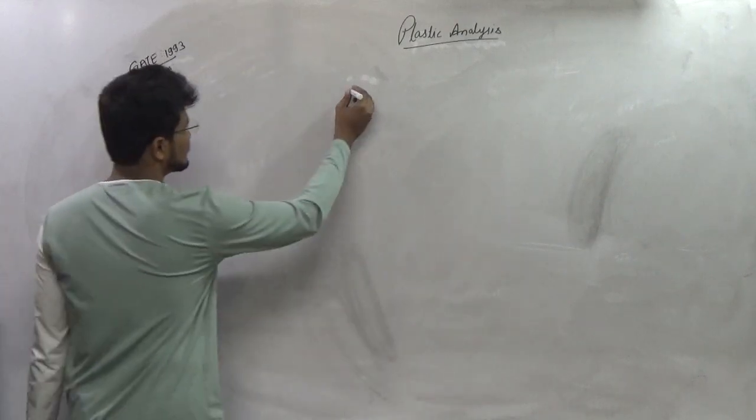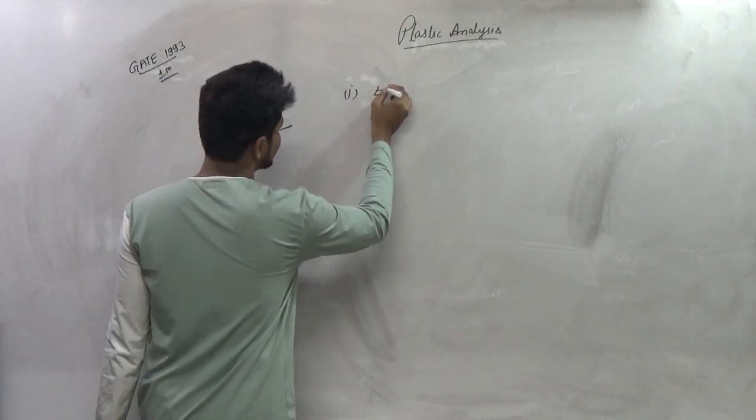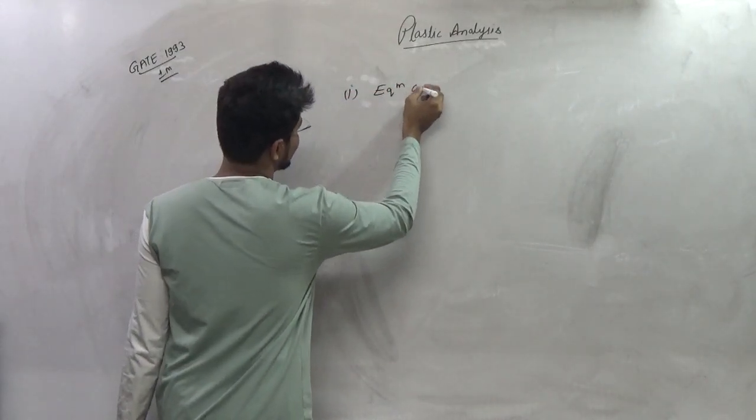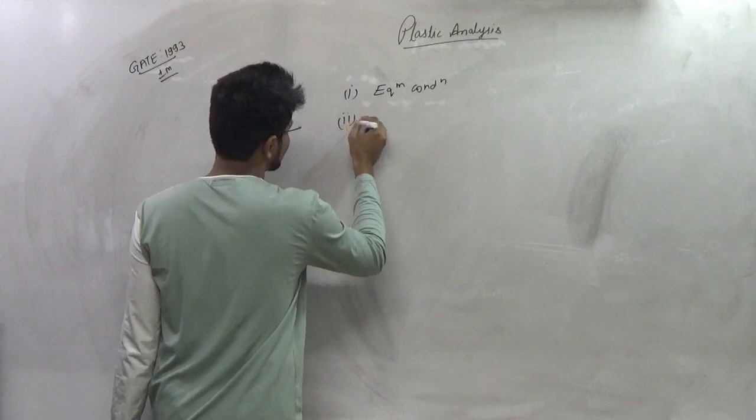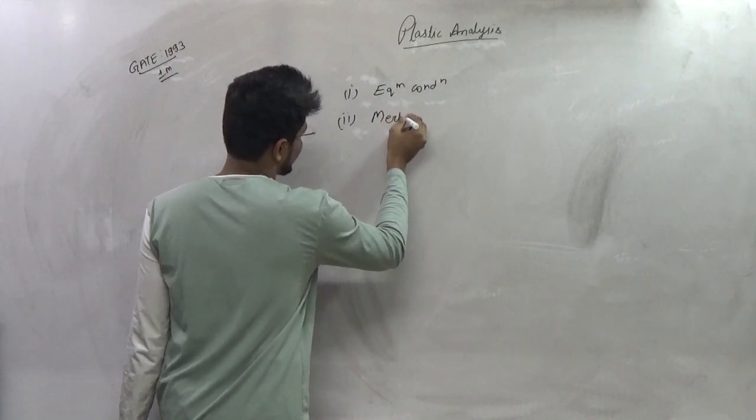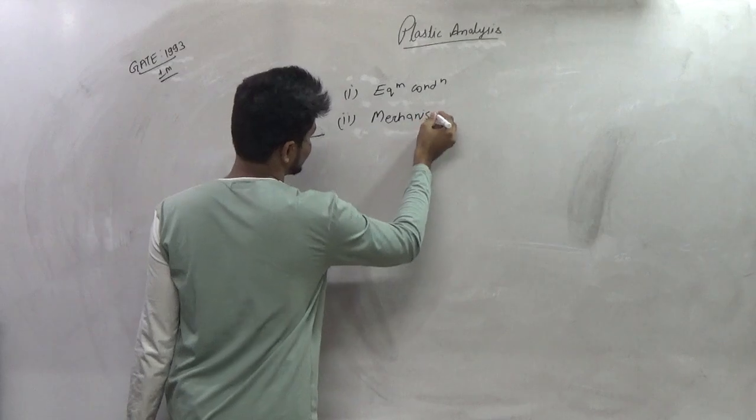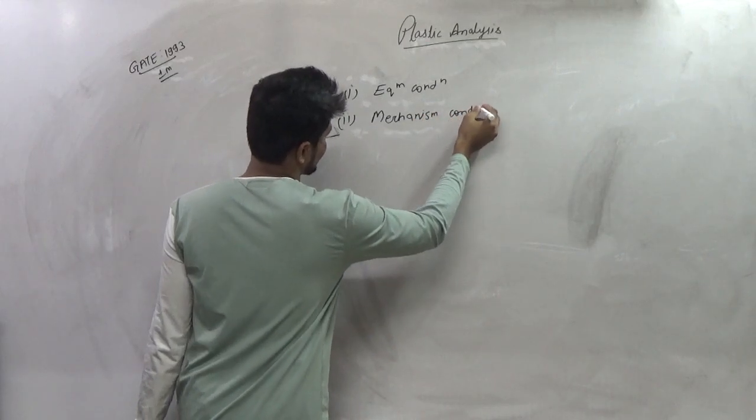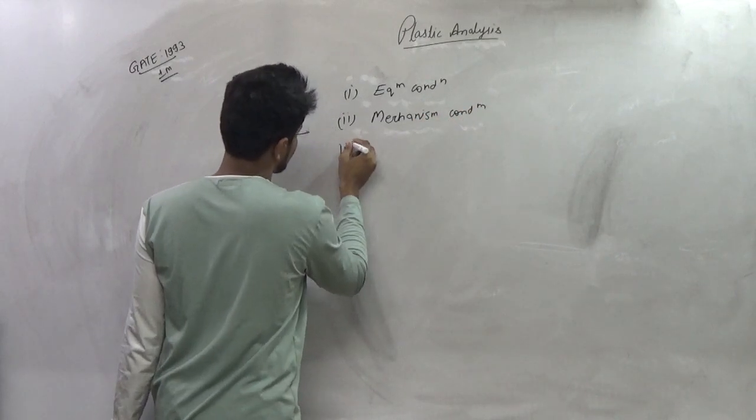So there are three conditions that we consider in plastic analysis. First is equilibrium condition, second is mechanism condition, and the third is yield condition.